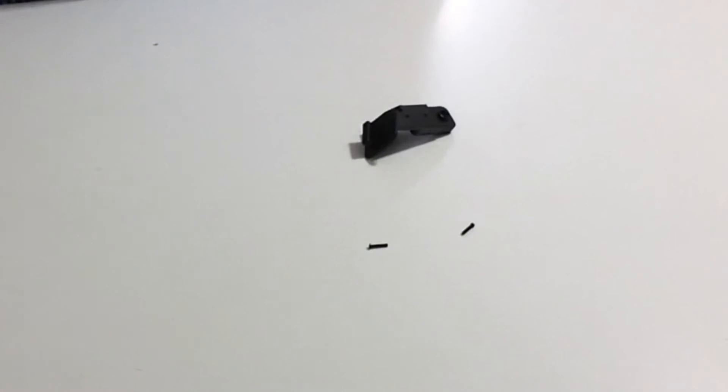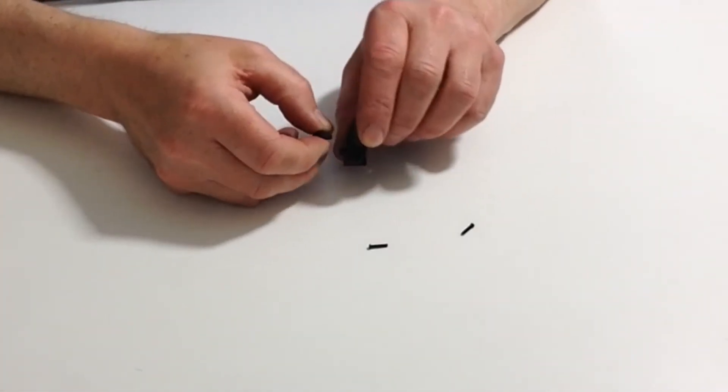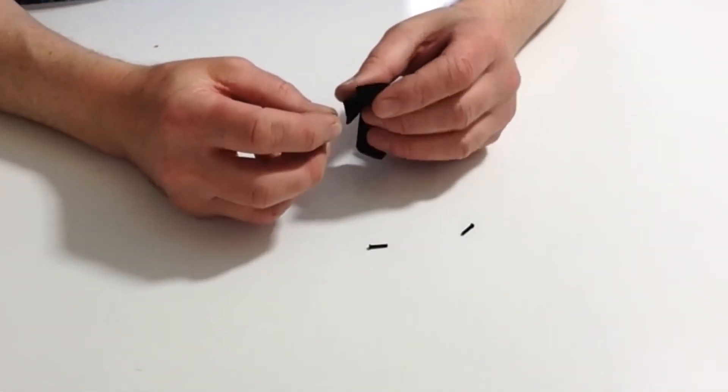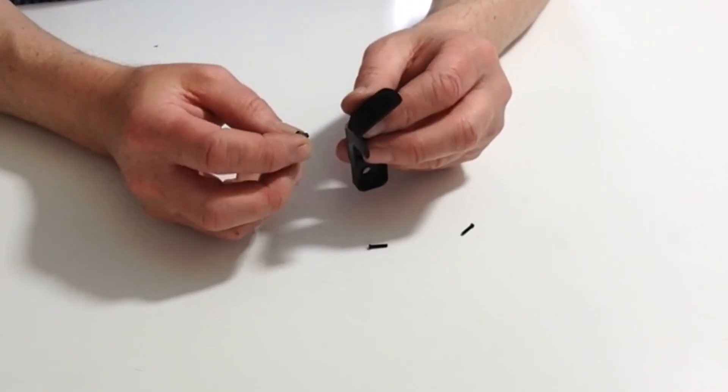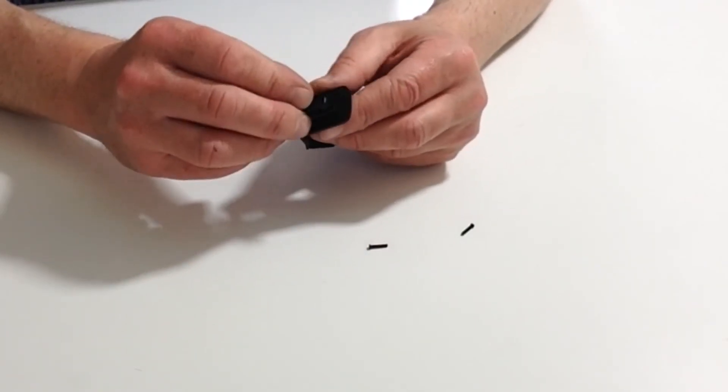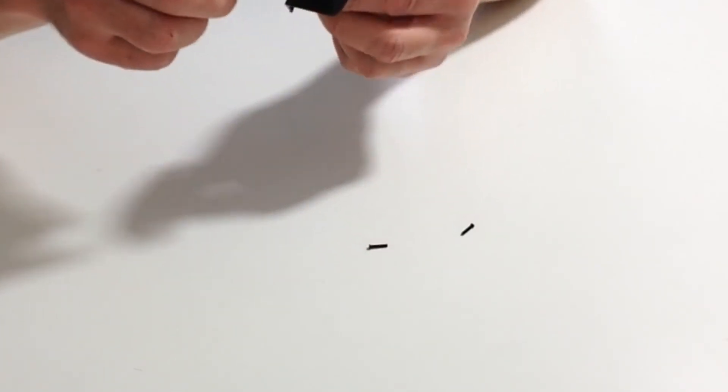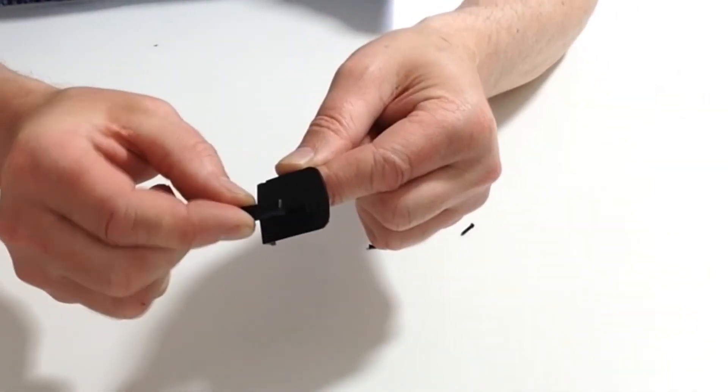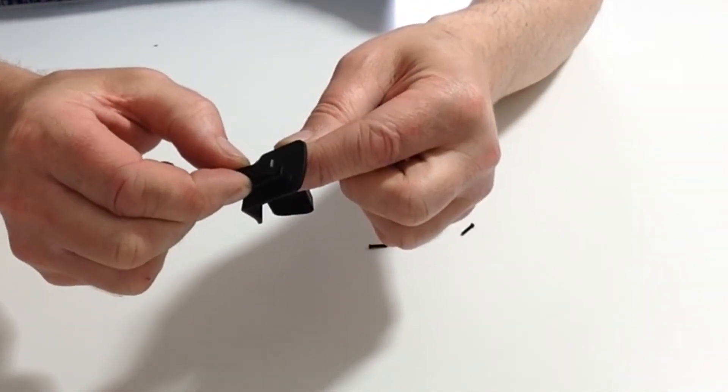In stage 9 we're assembling Robbie's right forearm frame. First, start with the finger mount. Take the right forearm frame and the finger mount - it doesn't matter which way it goes in. It will go either way, so just place it into position.